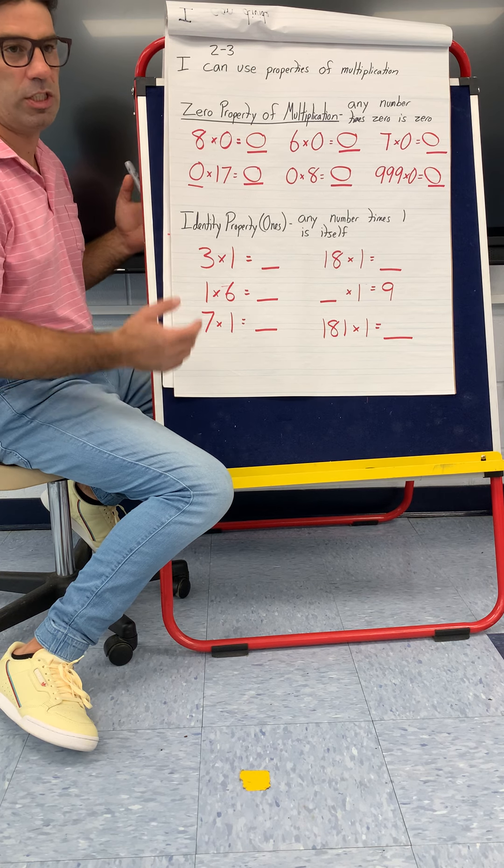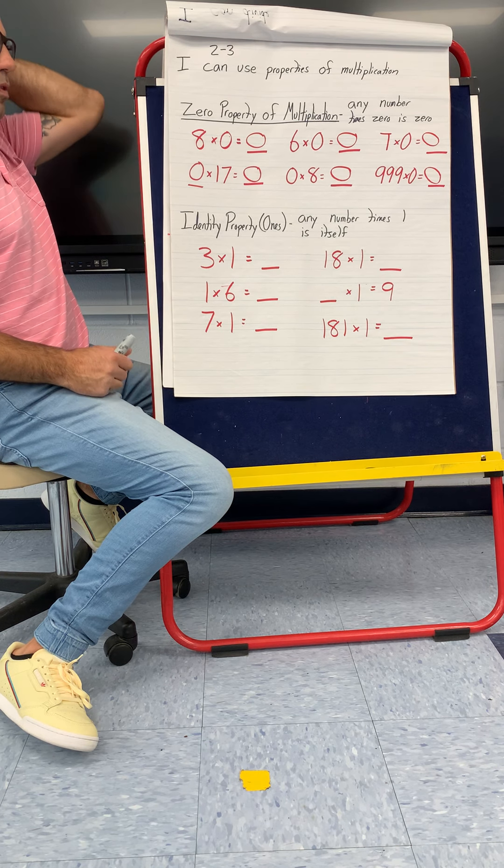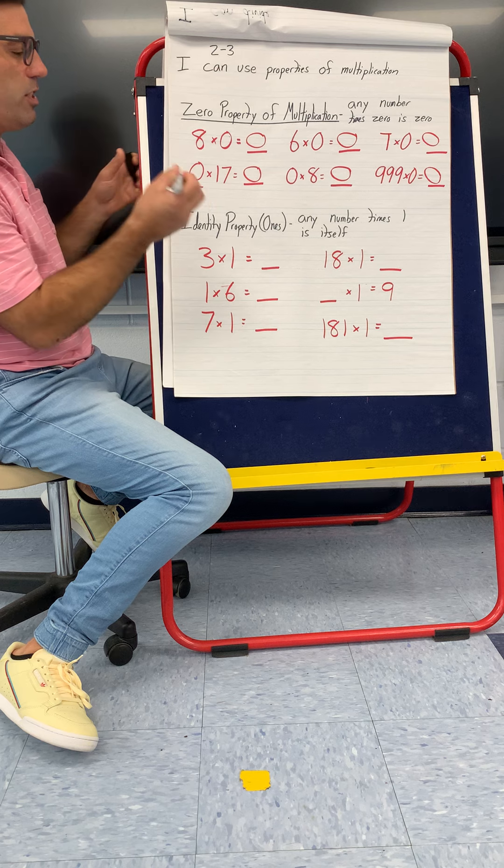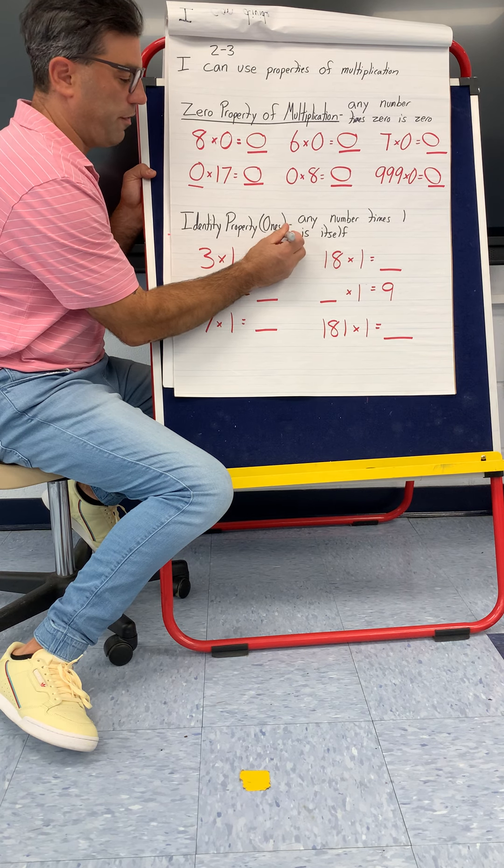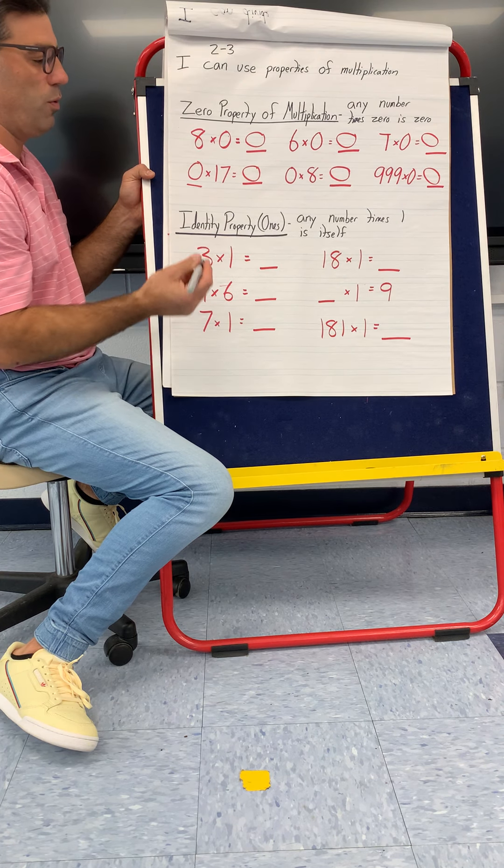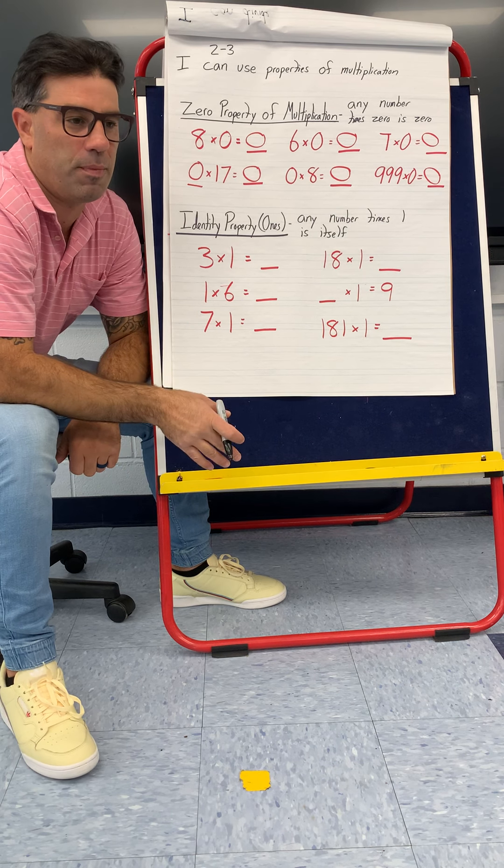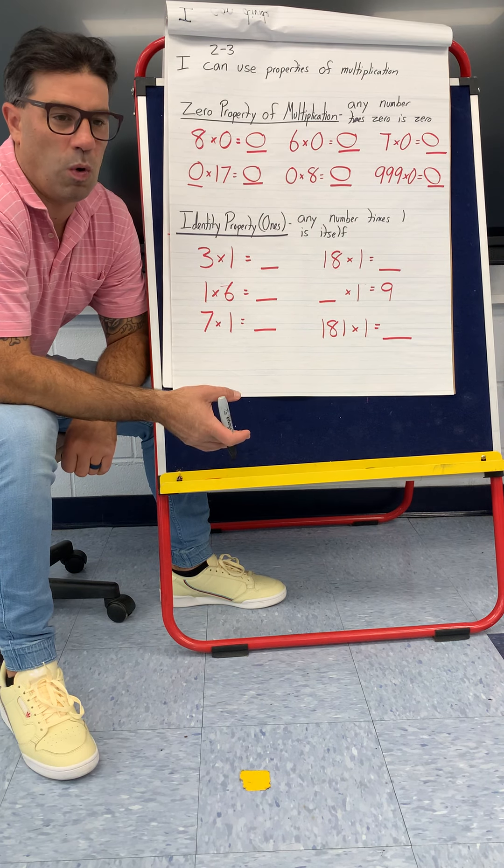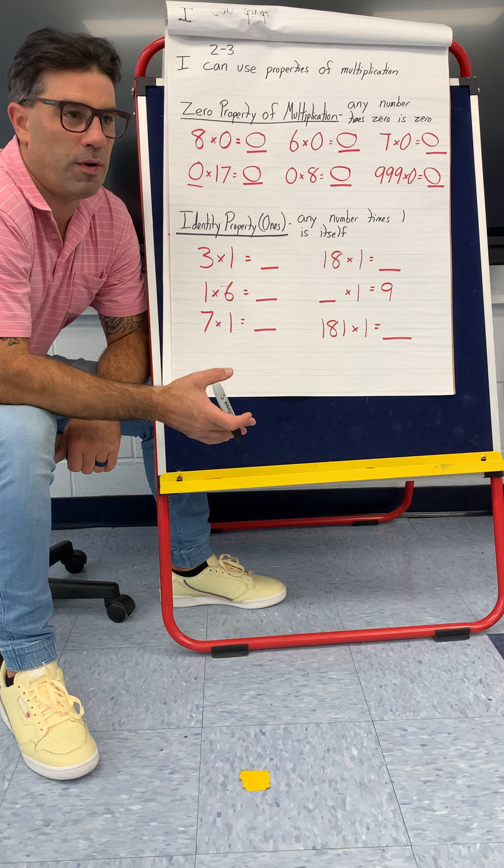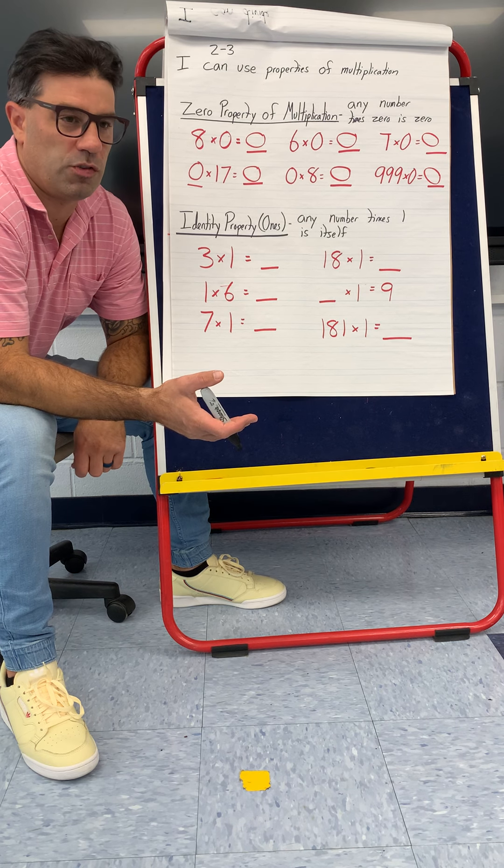The identity property is just the fancy name for something called the ones property. Basically all it means is any number times one is that number.